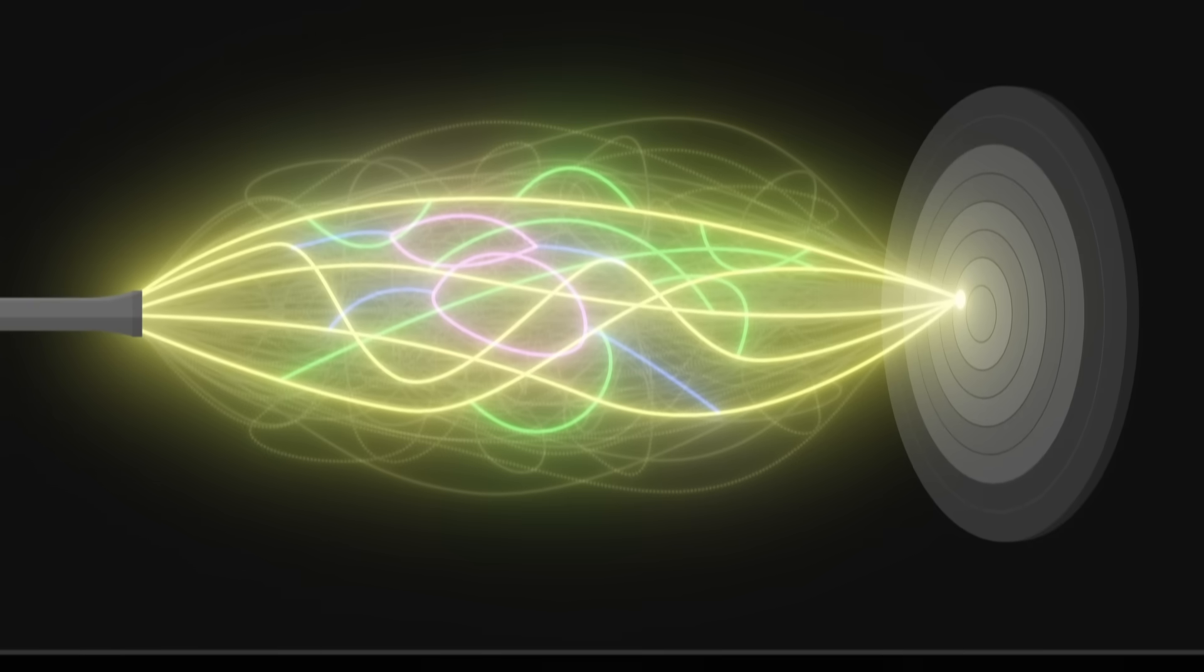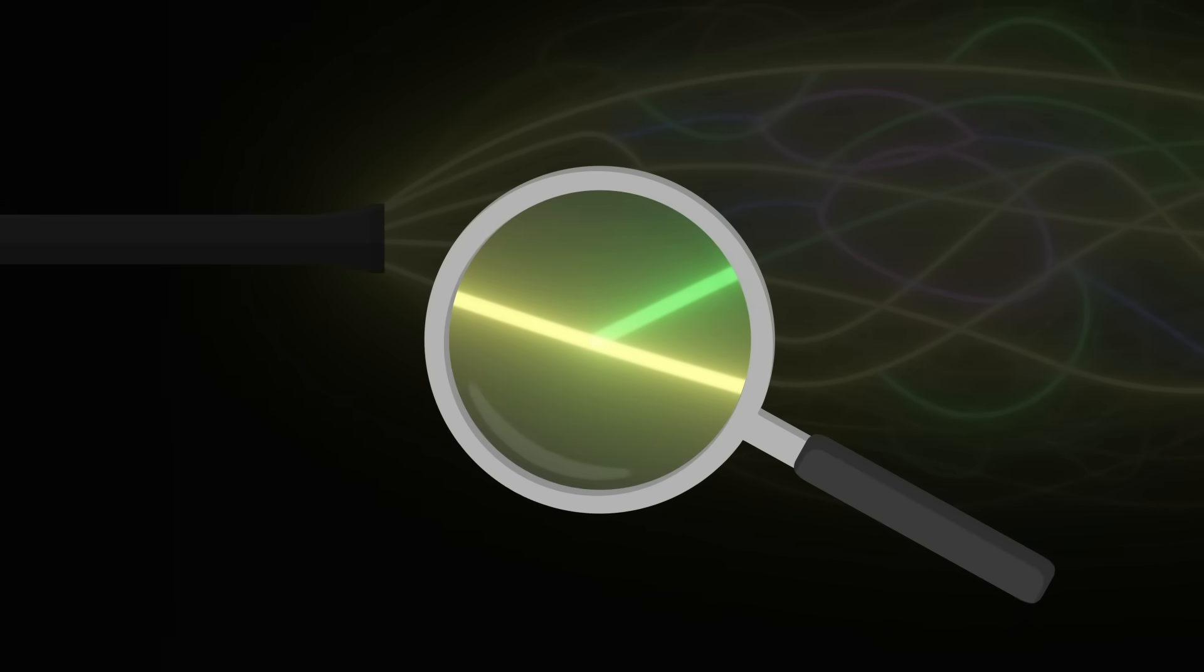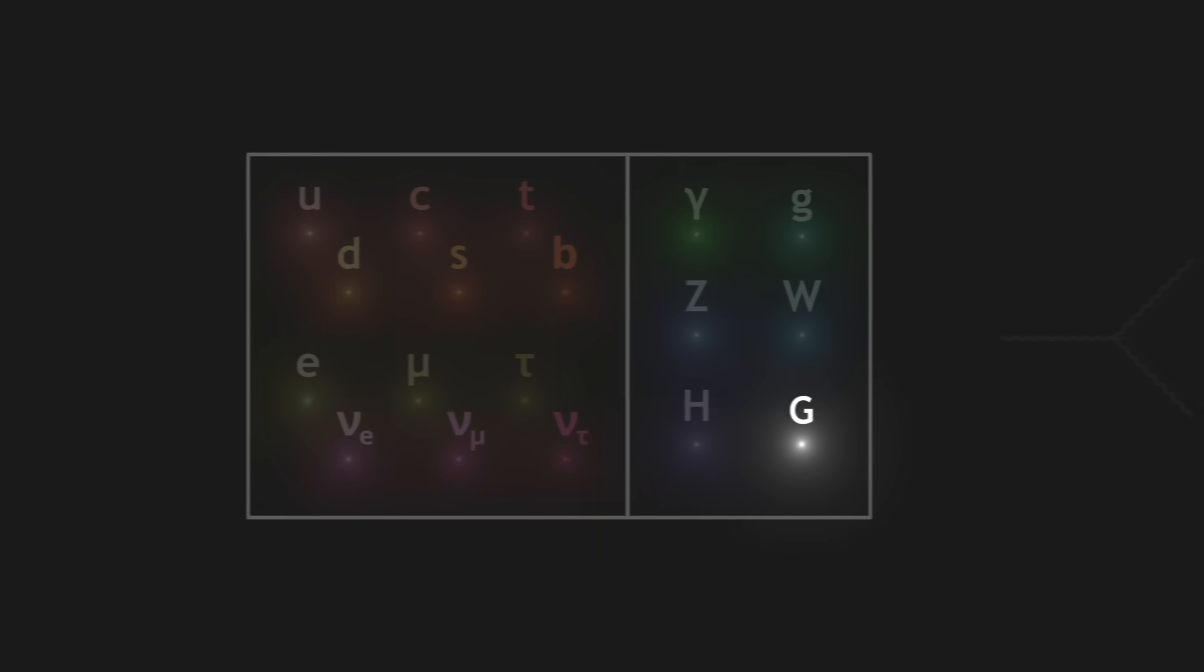Incidentally, interactions in the standard model were local. The emission of a photon was instantaneous, for example. In string theory, interactions are now continuous. Particles are no longer emitted instantaneously, but gradually. This gets rid of the infinities that we obtained when we tried to include the graviton in the standard model.